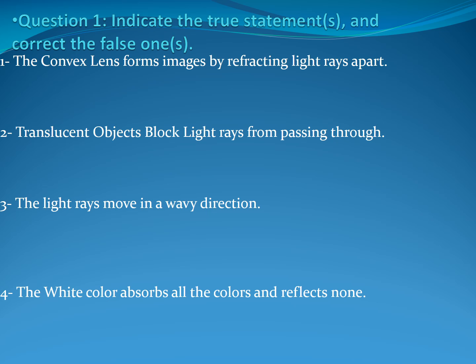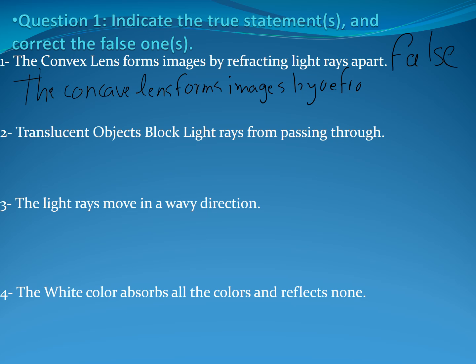The convex lens forms images by refracting light rays apart — Philippe says it's false. What's the correction? The convex lens forms images by refracting light rays together. Excellent. The convex lens forms images by refracting light rays together at a specific point.